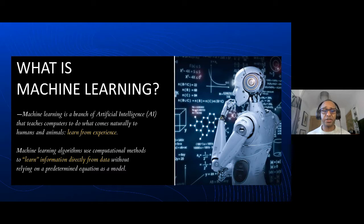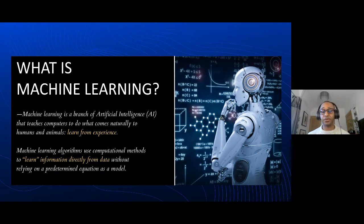Machine learning is a branch of artificial intelligence that teaches computers to do what comes naturally to humans and animals — the key being that it learns from experience. Machine learning algorithms use computational methods to learn information directly from data, without relying on a predetermined equation as a model.